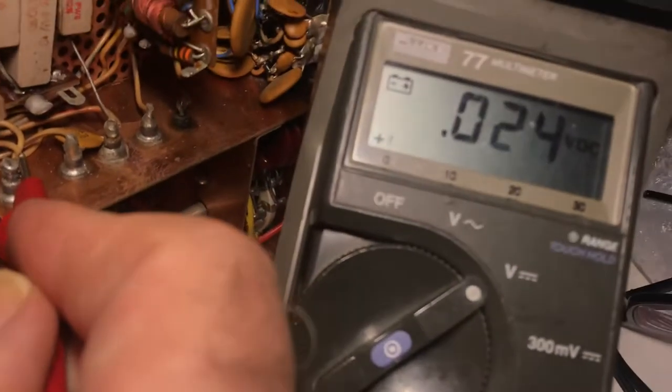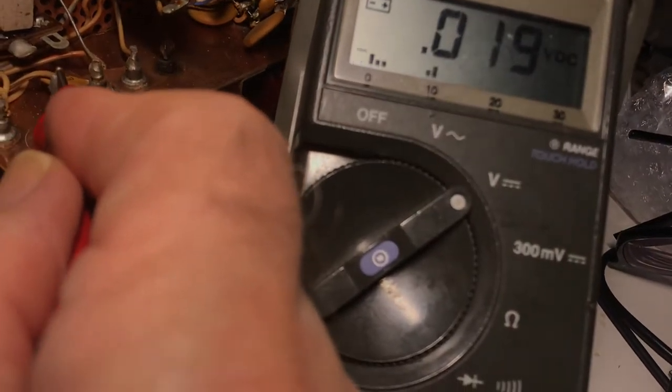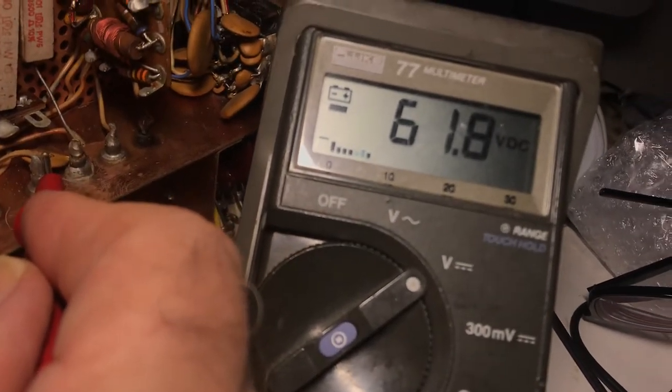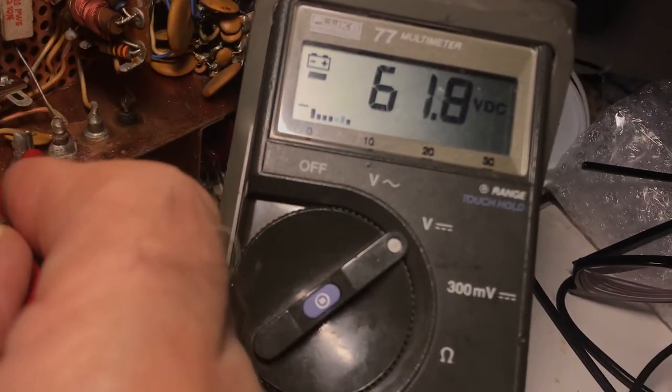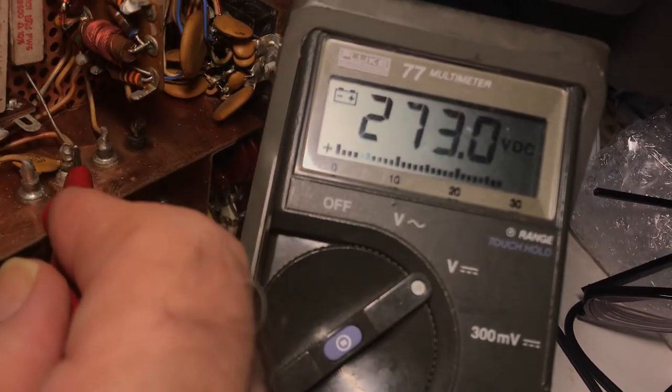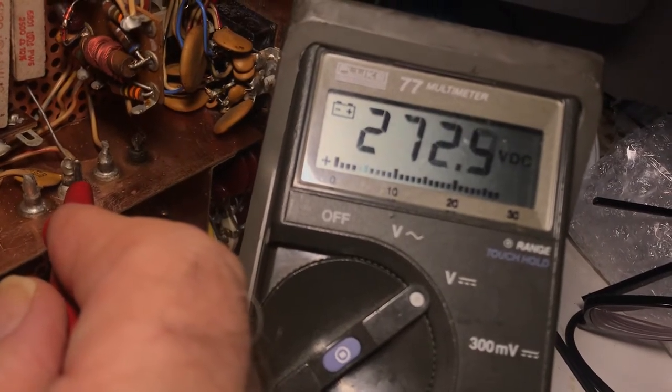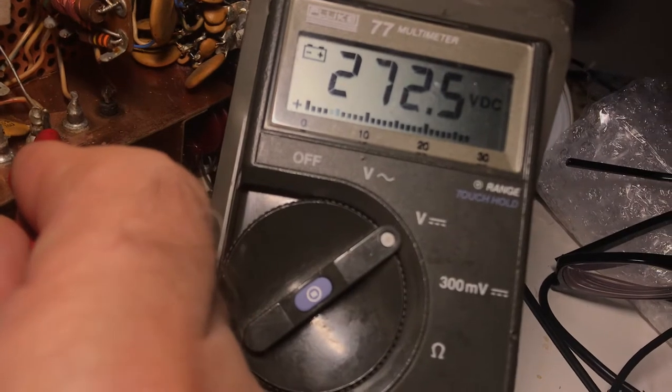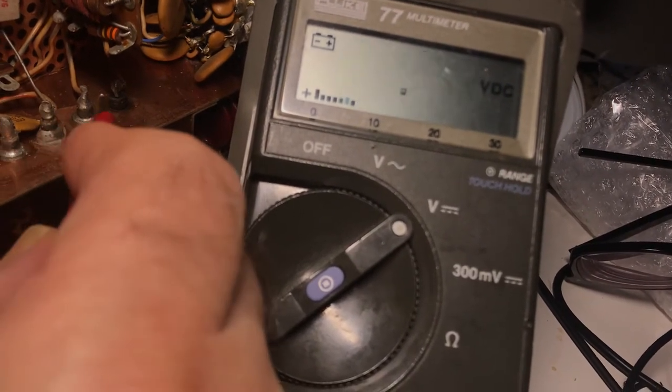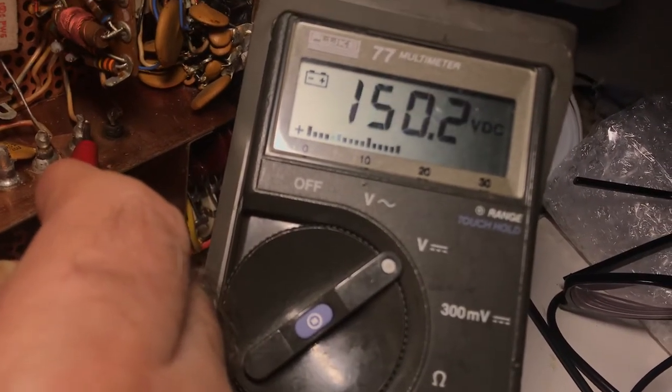This one I can't really get much reading on. This one's the negative bias and sure enough there's a negative 61 volts. This is the old faithful 250 volts or 270 volts which is good.